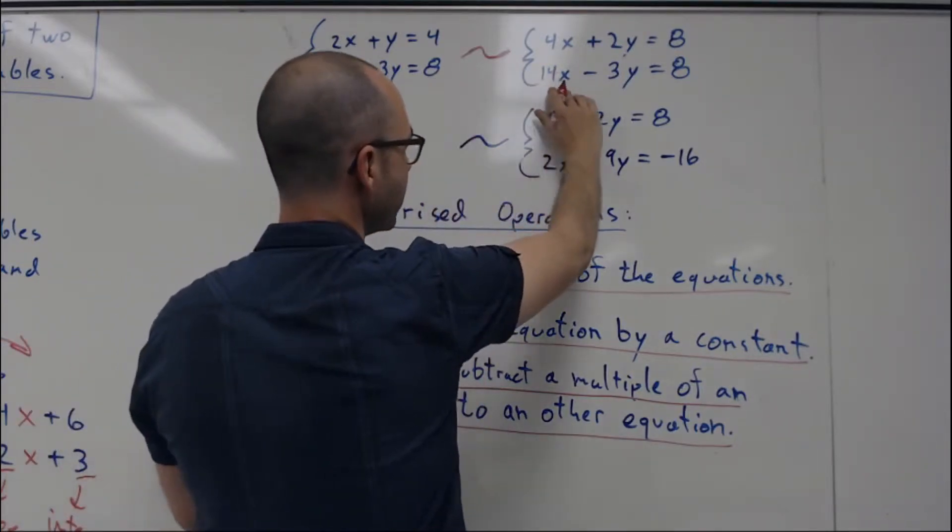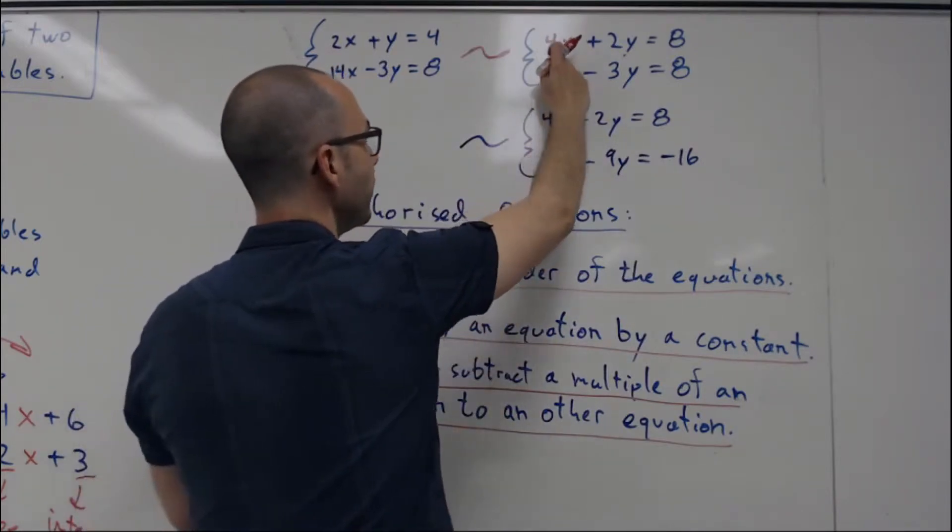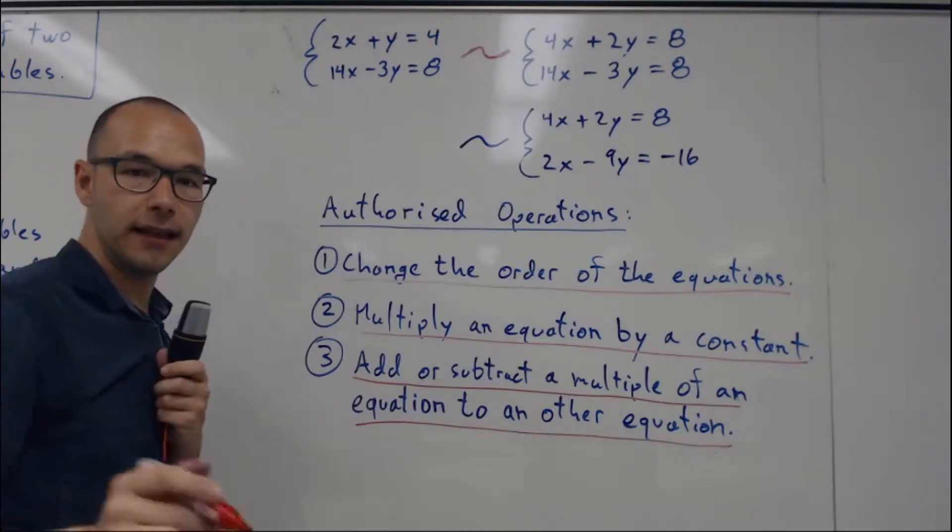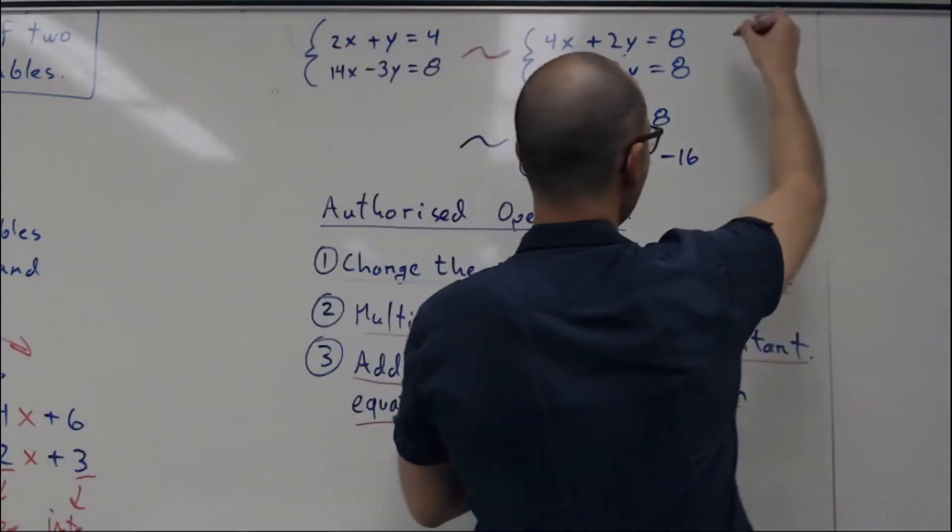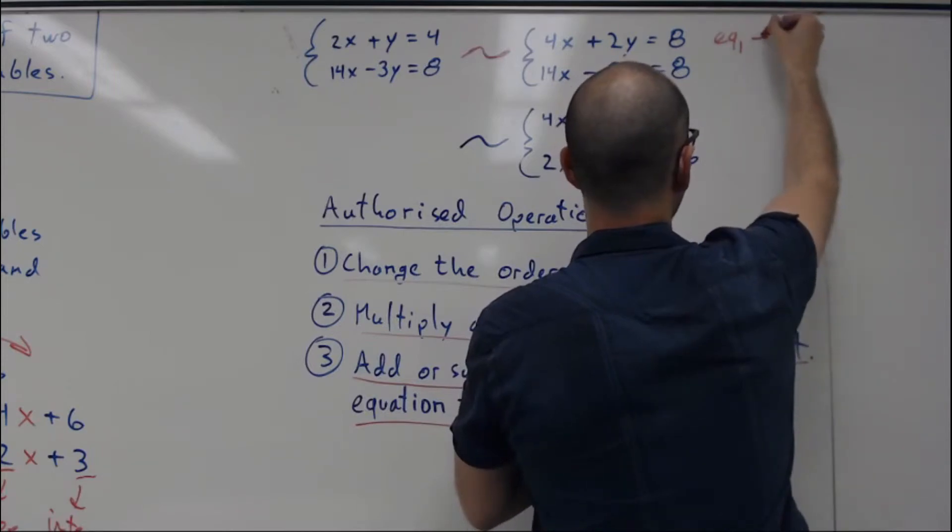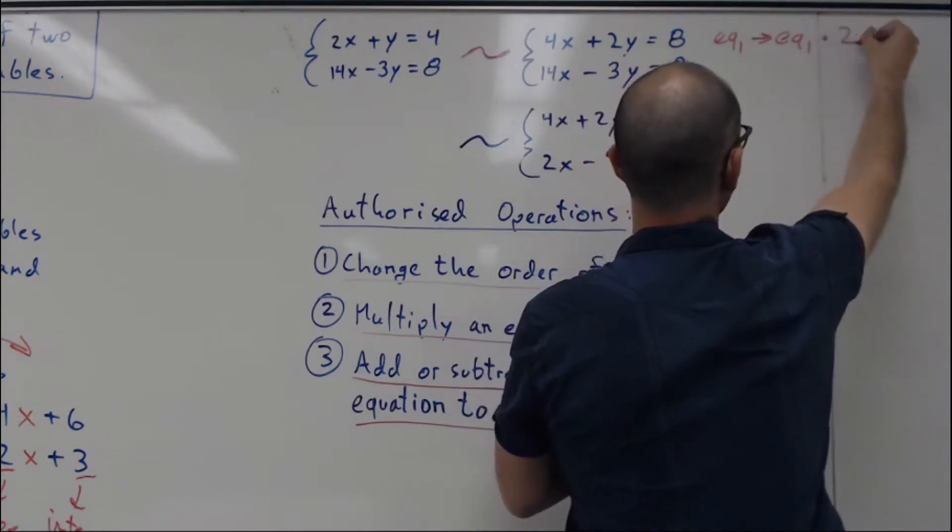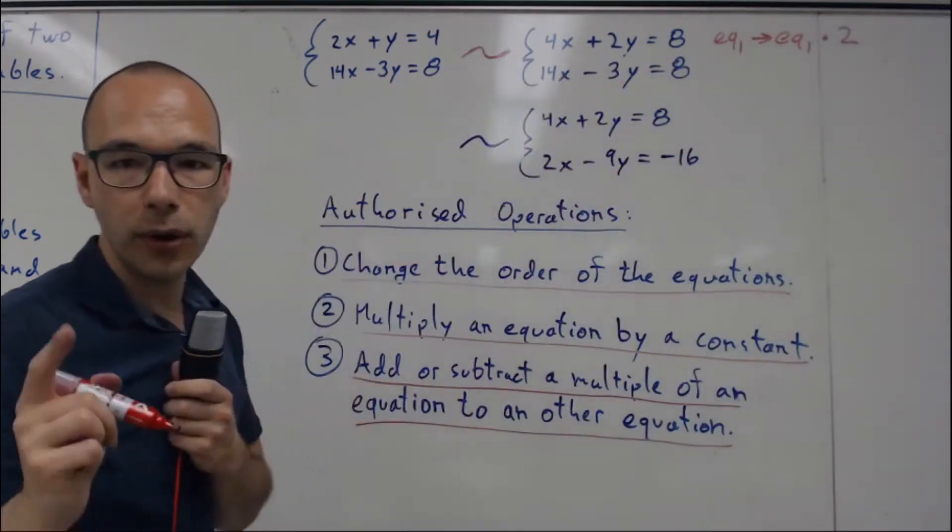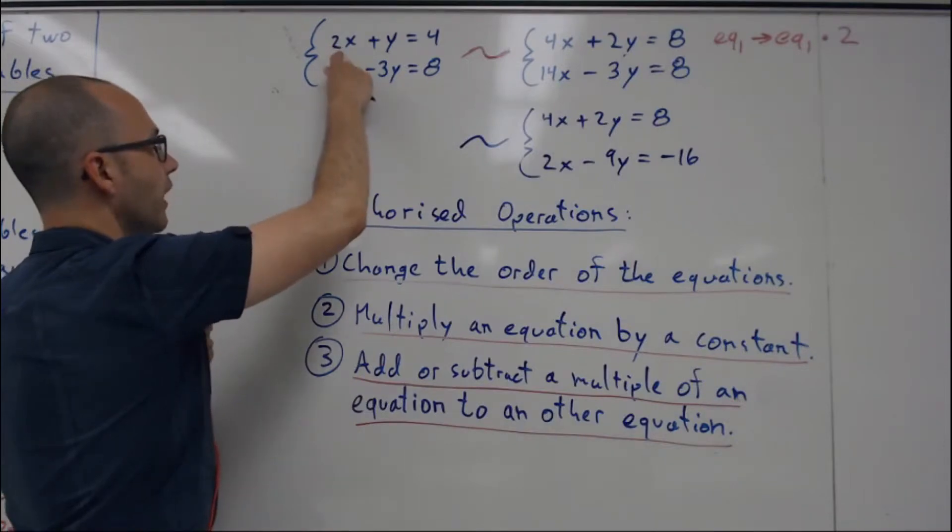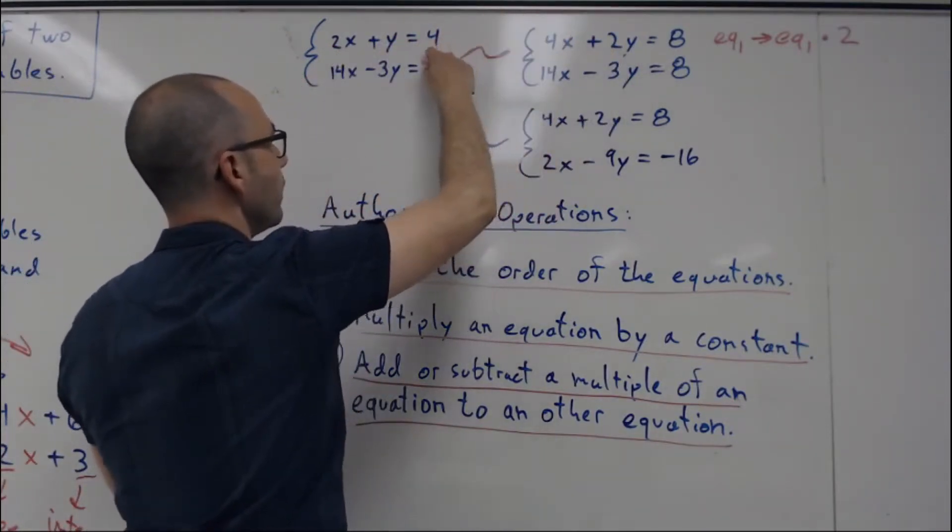This equation is exactly the same as that one. But the first equation became 4x + 2y = 8. And what I did to get there is to take equation 1 became equation 1 multiplied by 2. So I multiplied my equation number 1 by 2. 2 times 2, 4. 2 times 4, 8.